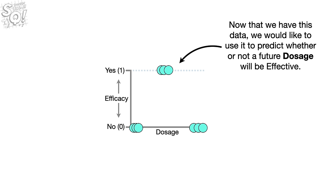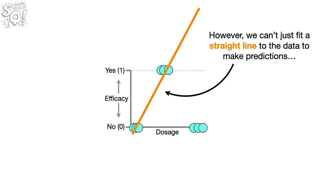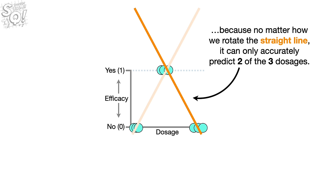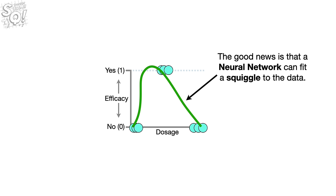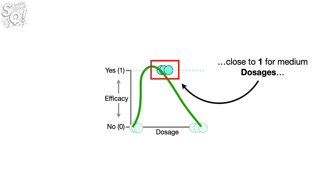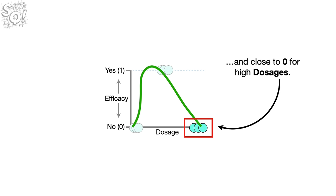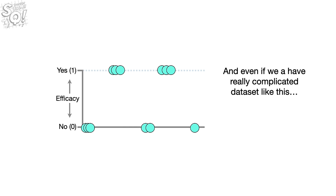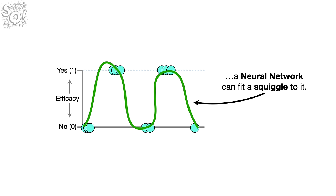Now that we have this data, we would like to use it to predict whether or not a future dosage will be effective. However, we can't just fit a straight line to the data to make predictions, because no matter how we rotate the straight line, it can only accurately predict two of the three dosages. The good news is that a neural network can fit a squiggle to the data. The green squiggle is close to zero for low dosages, close to one for medium dosages, and close to zero for high dosages. And even if we have a really complicated data set, a neural network can fit a squiggle to it.